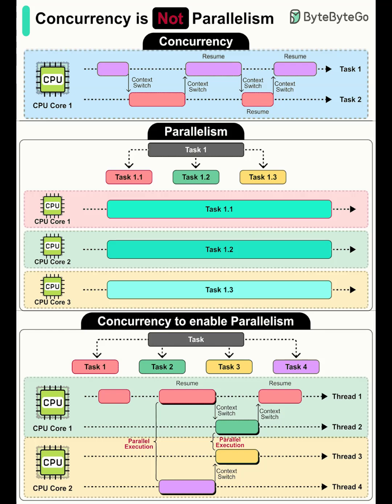Concurrency is a design approach where multiple tasks make progress during the same time period by taking turns on the CPU. Even with a single CPU core, the system can start, pause, and resume different tasks so they overlap in time. This is managed through context switching — the CPU rapidly swaps which task is active. To us, it looks like everything is moving simultaneously, but under the hood each task is getting small slices of time.